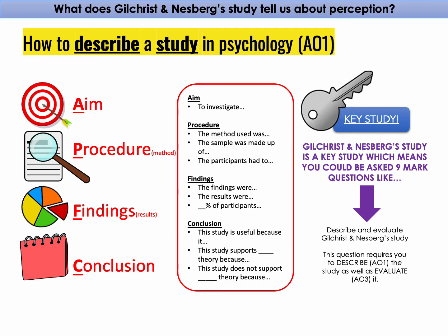You will need to know the aim, procedure, findings, and conclusion of Gilchrist and Nesberg's study so that you can achieve four marks for AO1 and five marks for AO3 if you are given a nine-mark question on it. So let's get started on the APFC of Gilchrist and Nesberg's study.